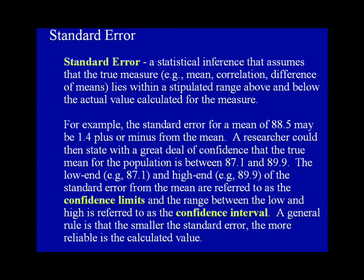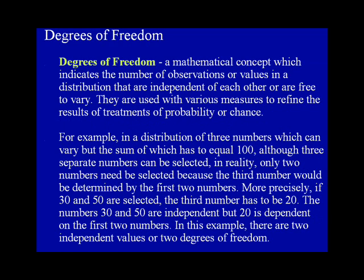Degrees of Freedom. Degrees of freedom is a mathematical concept which indicates the number of observations or values in a distribution that are independent of each other or are free to vary. They are used with various measures to refine the results of treatments of probability or chance. For example, in a distribution of three numbers which can vary but the sum of which has to equal 100, although three separate numbers can be selected, in reality only two numbers need to be selected because the third number would be determined by the first two numbers. More precisely, if 30 and 50 are selected, the third number has to be 20. The numbers 30 and 50 are independent, but 20 is dependent on the first two numbers. In this example, there are two independent values or two degrees of freedom.